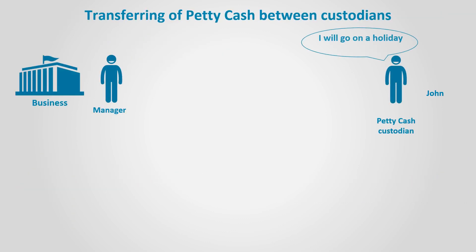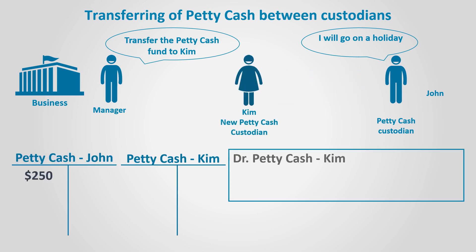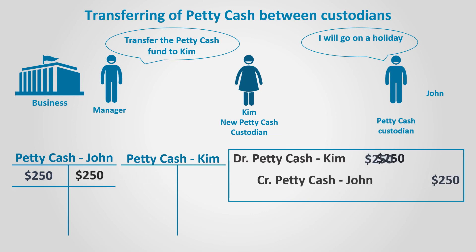If the Petty Cash custodian is going on a holiday or the management asks him to transfer the Petty Cash to another employee, the custodian will pass the cash to the new custodian. Let's assume John, the old Petty Cash custodian, is going to transfer the Petty Cash fund to Kim. In such a case, Kim's Petty Cash account is debited and John's fund is credited by its balance — $250 in this case — to close it.